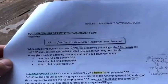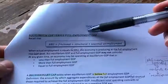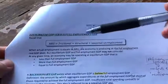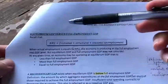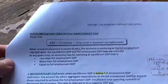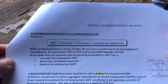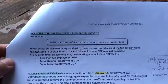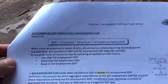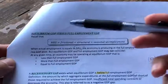So what is the difference between equilibrium GDP and full employment GDP? You're all familiar with equilibrium GDP, which is the amount of goods and services being produced in the economy being exactly equal with the amount of aggregate spending. So if they are at equilibrium, the amount would be equal to one another.